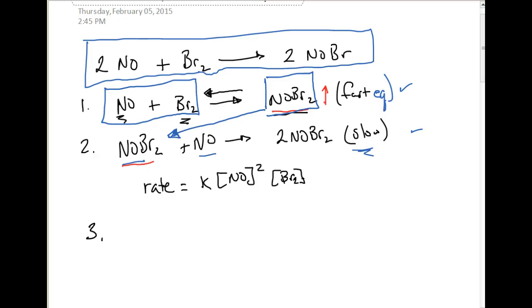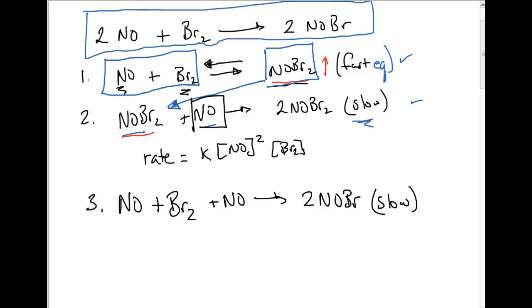So we're going to plug in NOBr2 into the slow step. So let's rewrite our slow step, and once again we're plugging in NO plus Br2 from step 1, plus we're going to plug in what was already there, NO, and that decomposes into NOBr and this is our slow step. So now we can write the rate law based on our slow step.